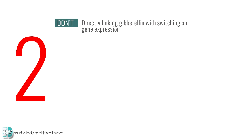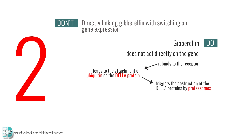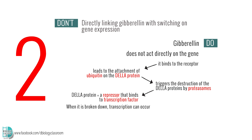Number 2: Directly linking gibberellin with switching on gene expression. Gibberellin does not act directly on the gene. When it binds to the receptor, it leads to the attachment of ubiquitin on the DELLA protein. This triggers the destruction of the DELLA proteins by proteasomes. DELLA protein is a repressor that binds to transcription factor. When it is broken down, transcription can occur so the gene is expressed.